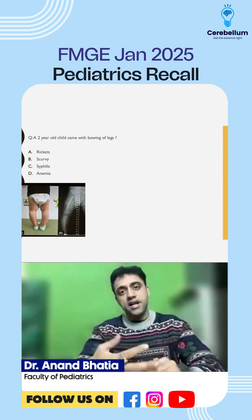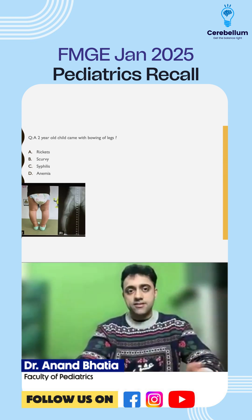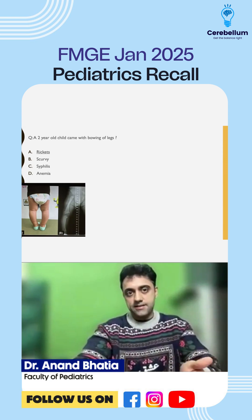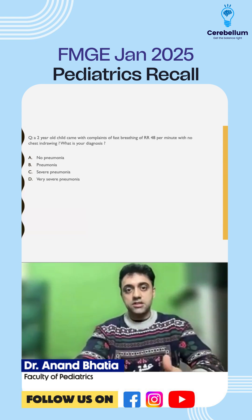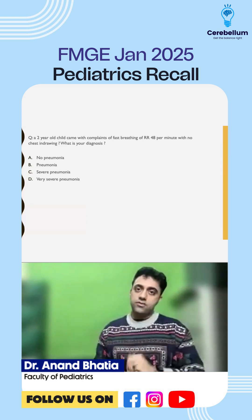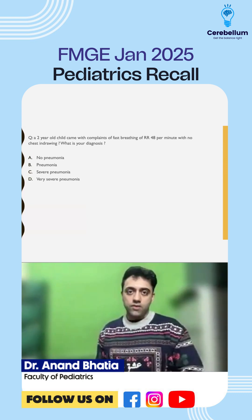One simple question had an X-ray showing bowing of legs — a two-year-old child with bowing of legs and widening of wrists. The straightforward answer for this question is rickets.